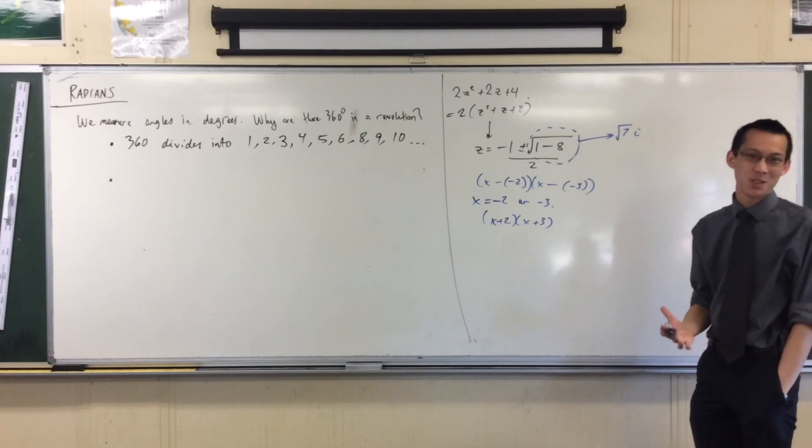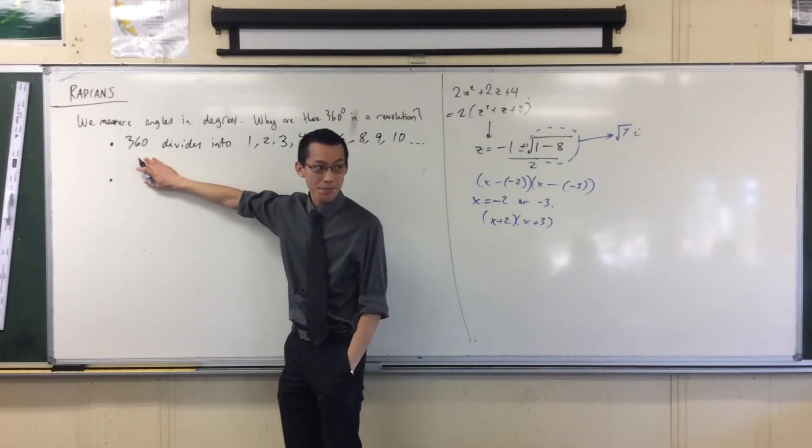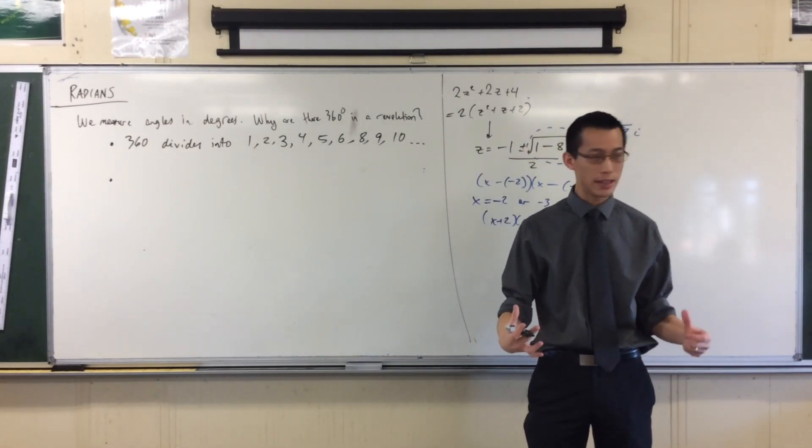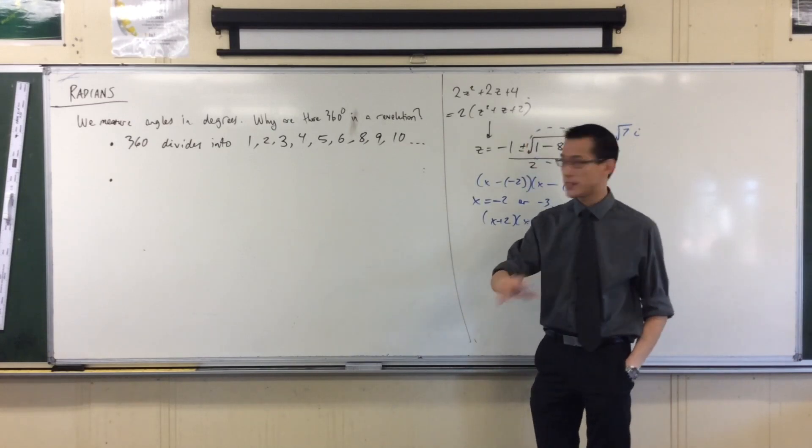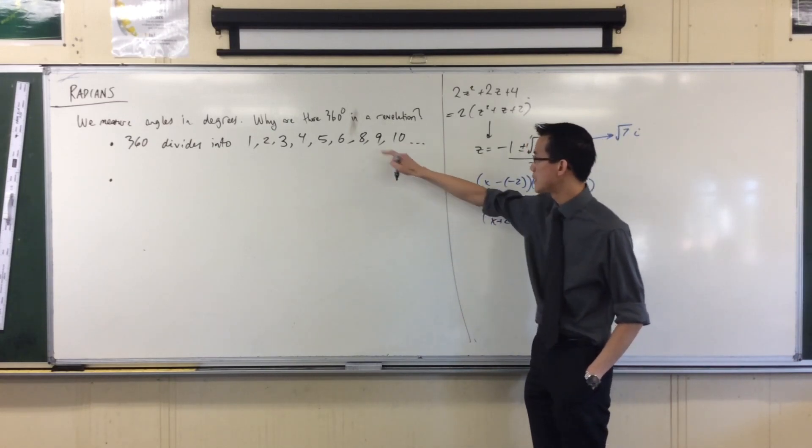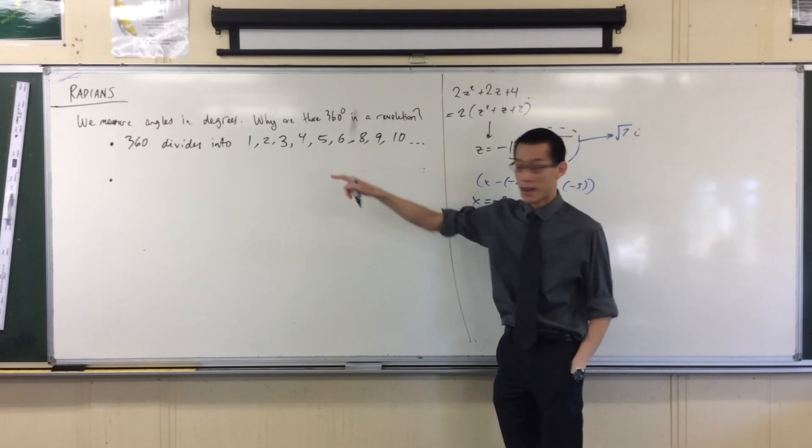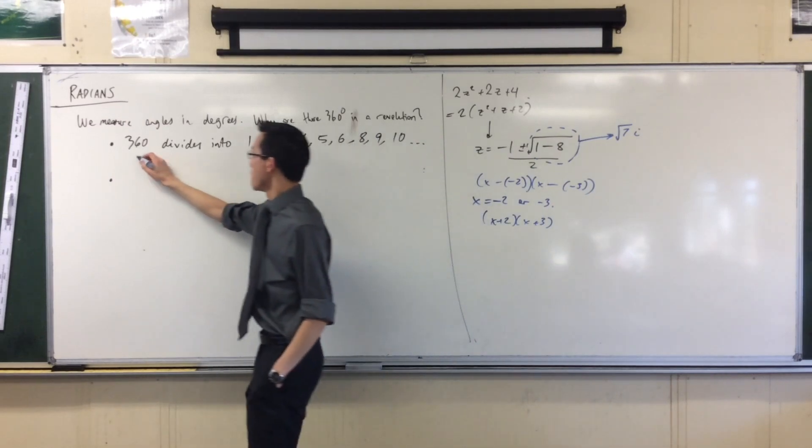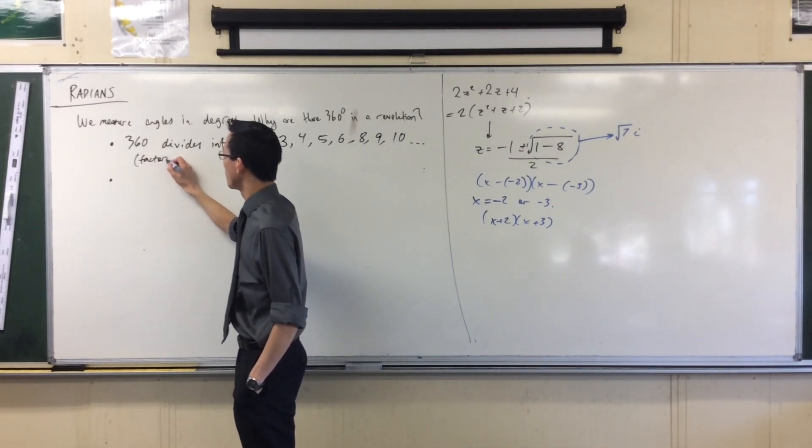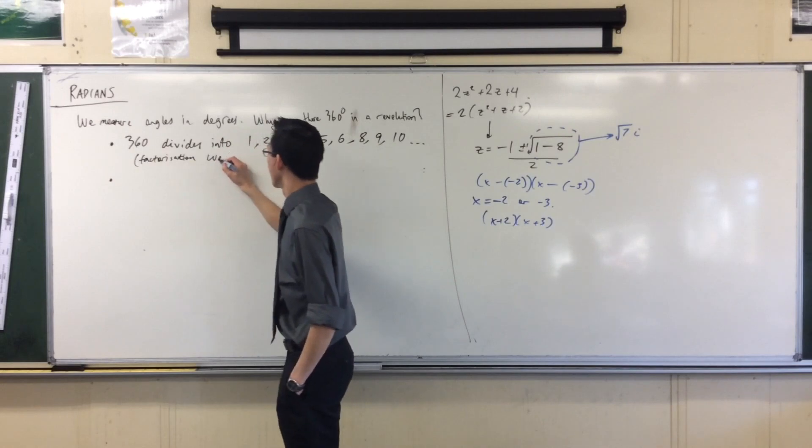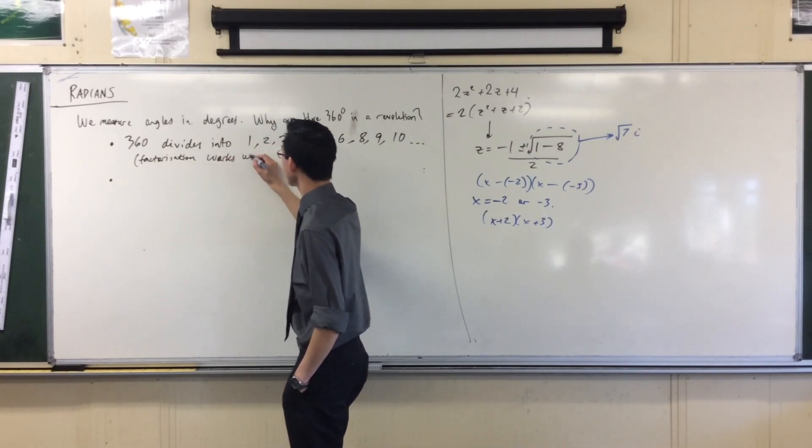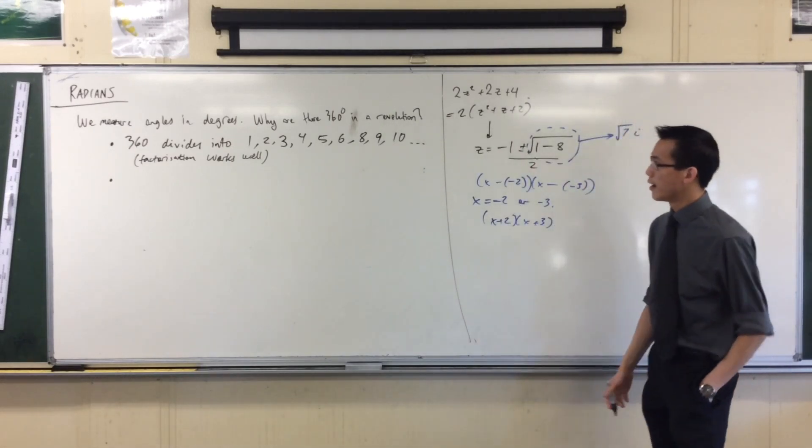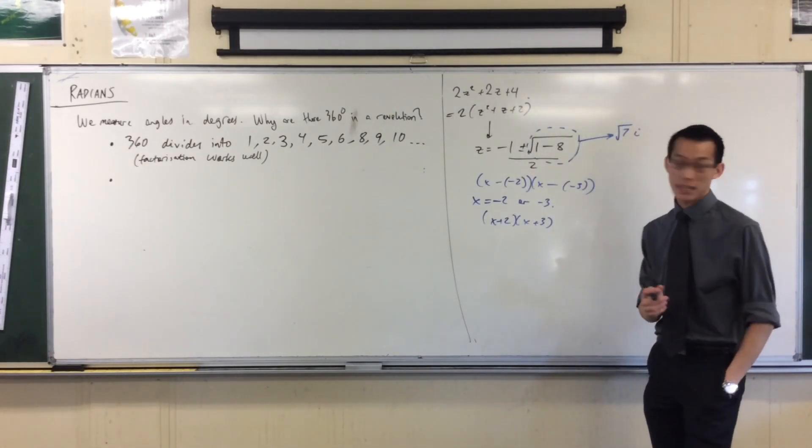That's really useful if you want to divide something up. It helps to stay in the whole number world, so you make your numbers sufficiently large. If you stay at 60 I think you miss out 8 and 9, you get the rest of them, but that's pretty cool. So 360 divides into those easily, so factorization works well.